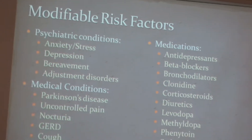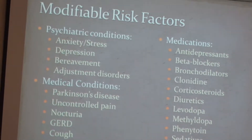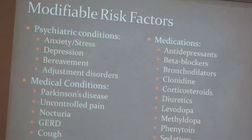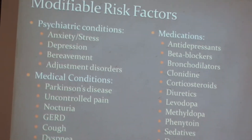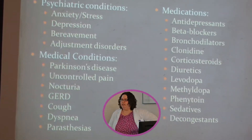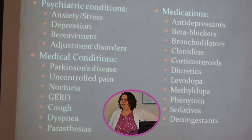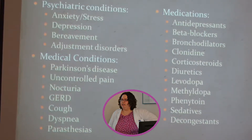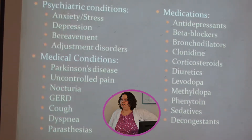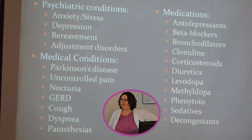Some modifiable risk factors for insomnia: comorbid insomnia can be secondary to psychiatric conditions — anxiety, stress, depression, having a lot on one's mind, recent loss, bereavement, or adjustment disorder. Medical conditions that cause difficulty sleeping include Parkinson's disease, uncontrolled pain such as arthritis or chronic lower back pain where the patient can't lie flat comfortably enough to fall asleep.